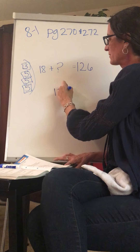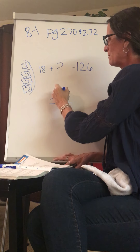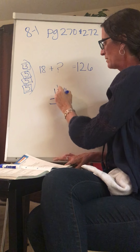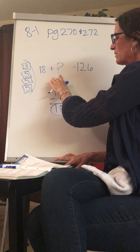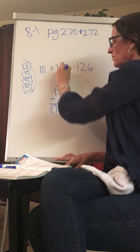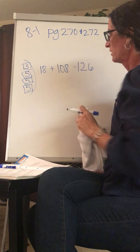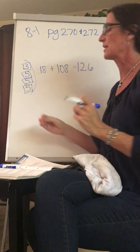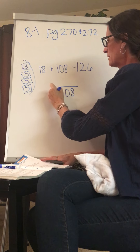So 126 minus 18: when I borrow, 16 minus 8 is 8. 1 minus 1 is 0 and 1 falls down. So I know this number here is 108. Mr. Granger found 108 pencils total out of the nine other classrooms. So if we divide those into those nine classrooms we would have 108 divided by 9.